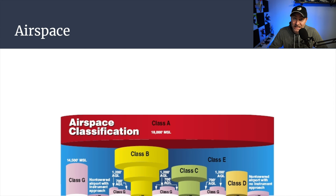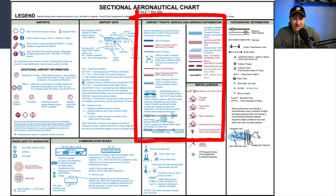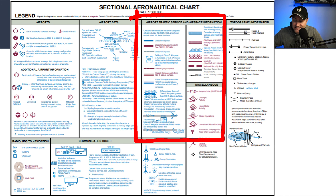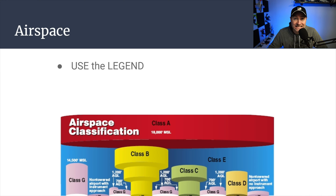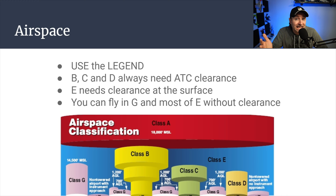Airspace can be tricky, and my advice is to use the legend. The legend will tell you: is it Class B, Class C, Class D, Class E at the surface? Is it a solid blue line or a dashed magenta line? You don't have to memorize all that — the legend is there, use it. B, C, and D always need clearance; you have to request it if you're flying in that airspace. Class E only needs clearance if you're flying in one of those Class E's at the surface — the dashed magenta line, which is on the legend anyway. Class G airspace and Class E generally don't need clearance.